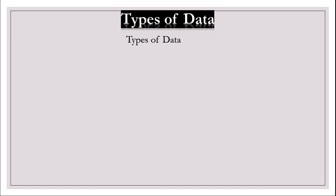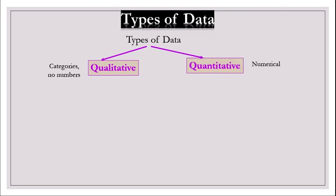Now, I'll introduce different types of data. All data can be classified as one of two general types: qualitative data, which means categories, no numbers, and quantitative data, which means numerical.